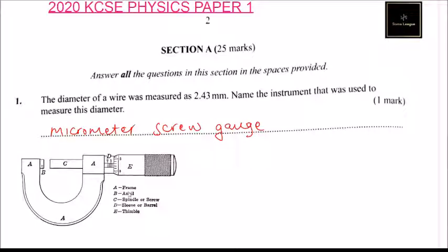We have part A, which is a frame. B is an anvil here. C is a spindle. We have D, which is a sleeve or barrel, and E is a thimble.